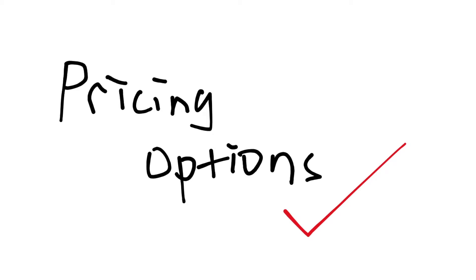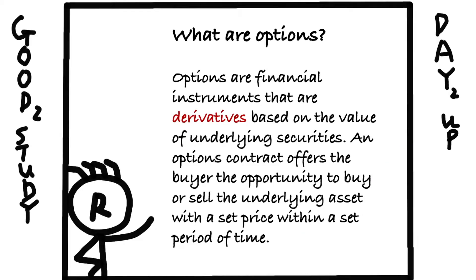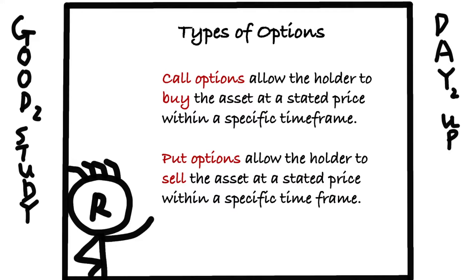Before we get into the pricing models, we need to quickly review what an option is. Options are financial contracts that are derivatives based on the value of the underlying securities. An option contract offers the buyer the right to buy or sell the underlying asset at a set price within a set period of time. There are two types of options — call and put. Call options allow the holder to buy the underlying asset, and put options allow the holder to sell it. The contracts give the buyer the right, and also give the seller the obligation to buy or sell if the buyer chooses to exercise.